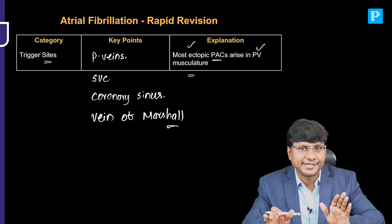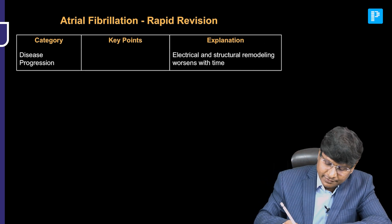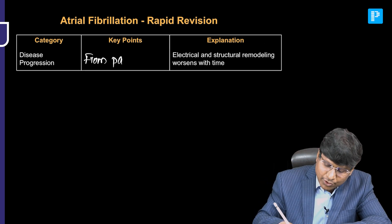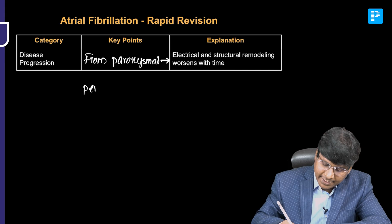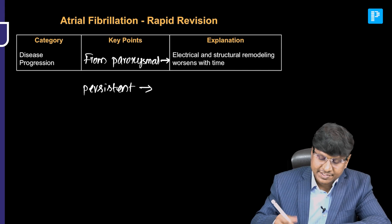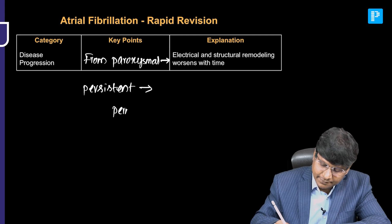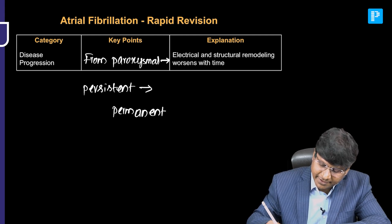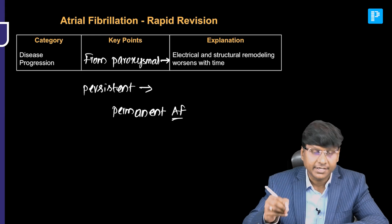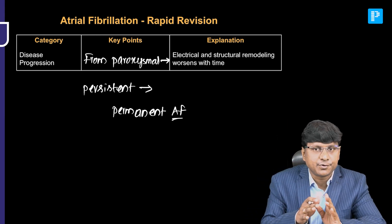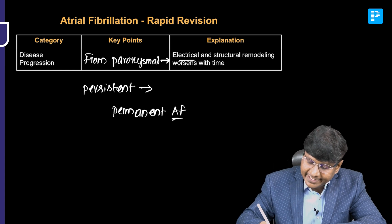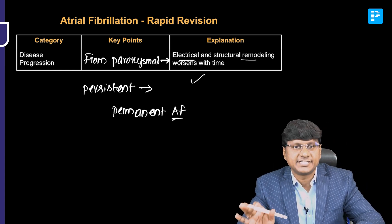The disease progresses from the state of paroxysmal AF to persistent AF, and from persistent AF it progresses to permanent AF. So from paroxysmal to persistent to permanent AF — the disease progression involves electrical and structural remodeling which worsens with time.